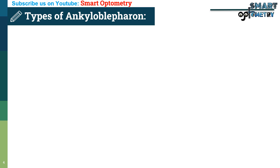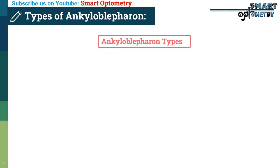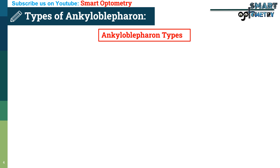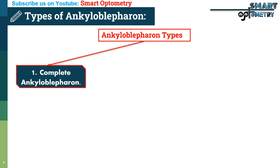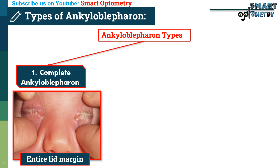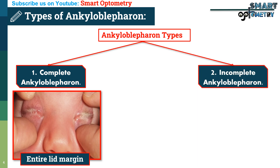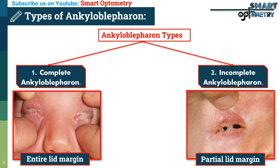What are the types of ankyloblepharon? There are two types. First, complete ankyloblepharon, where the adhesion covers the entire lid margin. Second, incomplete ankyloblepharon, where the adhesion is partial, affecting only a segment of the lid margin.